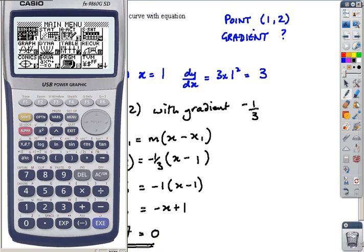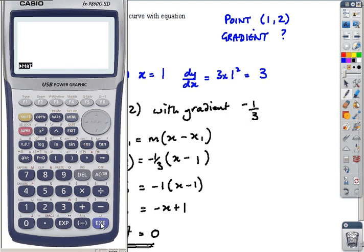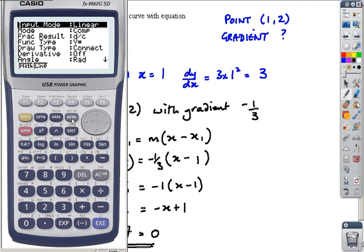If you have a calculator in an exam, you can find the gradient using your calculator. Press shift and menu to go to setup, input mode—I'm going to choose math mode, F1, back to screen.